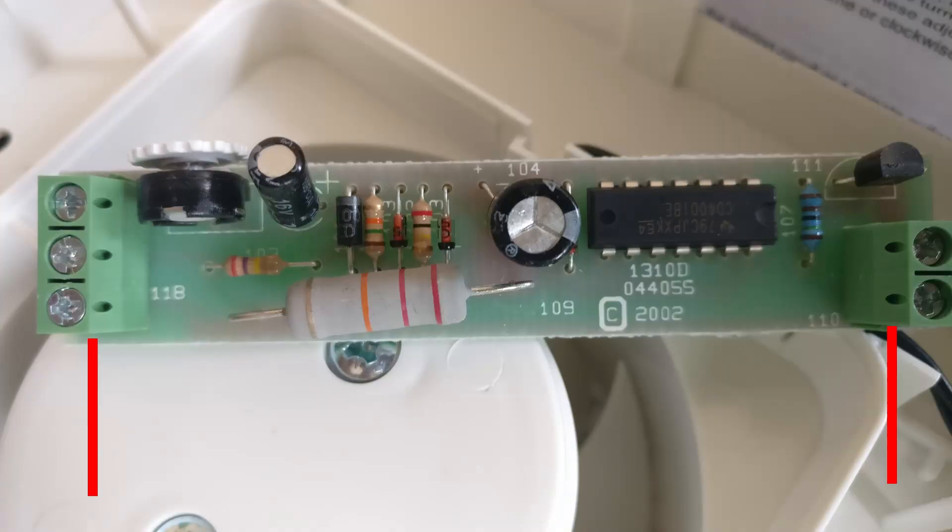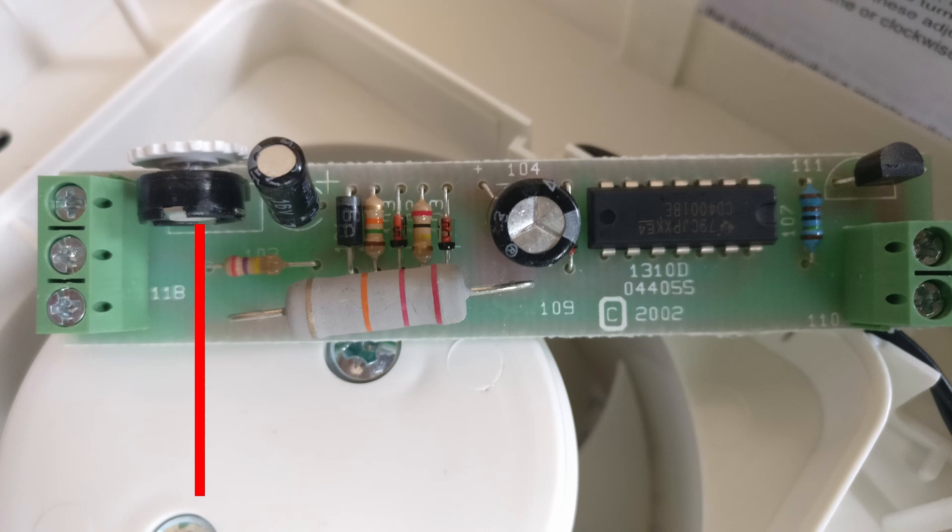We have two terminal blocks, a potentiometer, some resistors, some capacitors, some diodes, an IC chip and a switching device. After taking a closer look at the individual components I identified them as shown here.